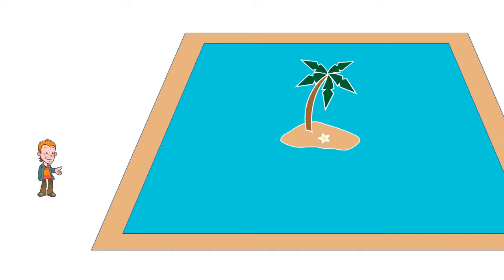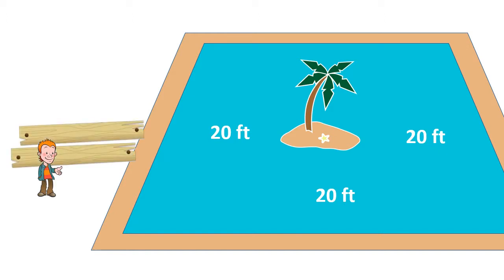A man wishes to reach the island in the middle of an ornamental lake without getting wet. The island is 20 feet from each edge. He has two planks each 19 feet long. How does he get across? You have 10 seconds.